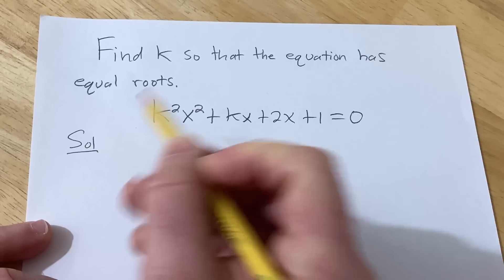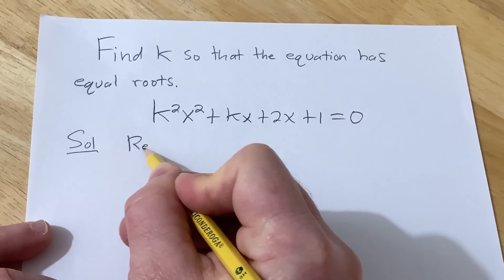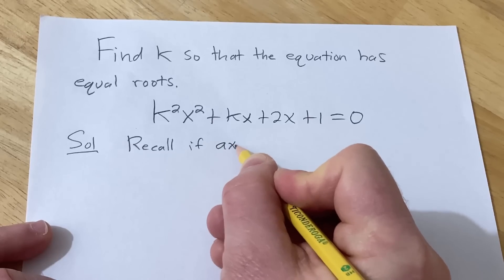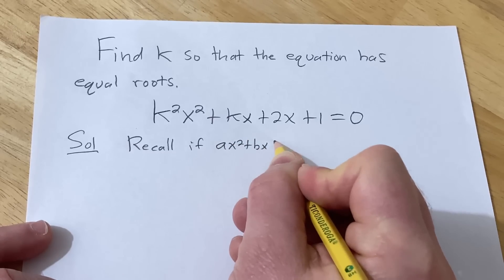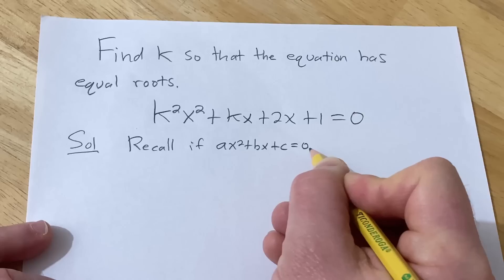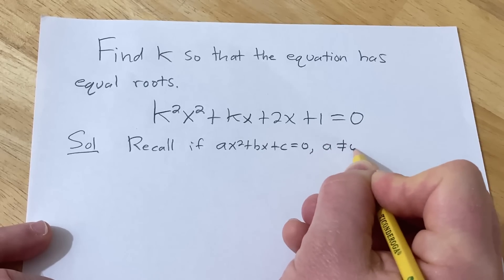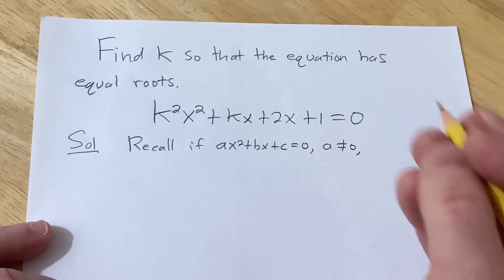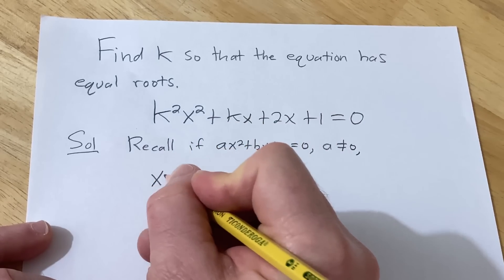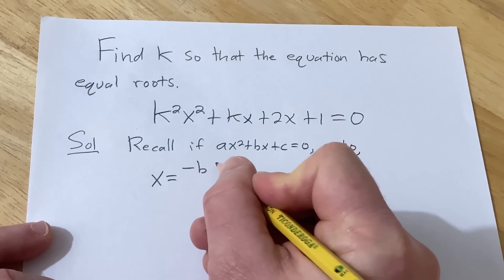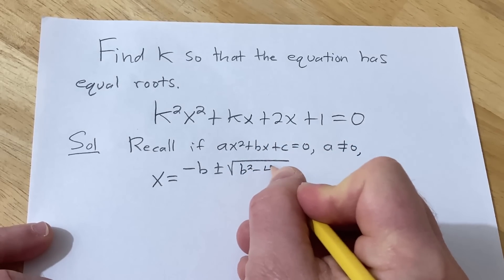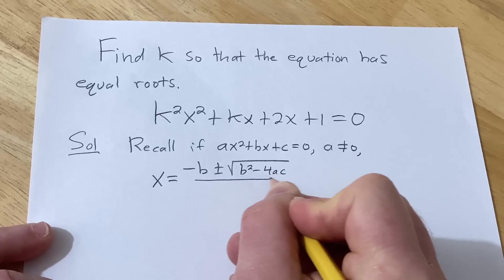Solution. So first recall that if you have an equation ax squared plus bx plus c equals 0, where a is not equal to 0, this is called a quadratic equation. And it has solutions given by a super powerful formula known as the quadratic formula, which is negative b plus or minus the square root of b squared minus 4ac, all divided by 2a.